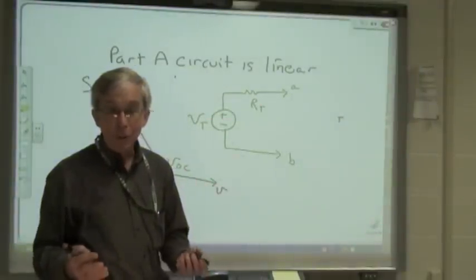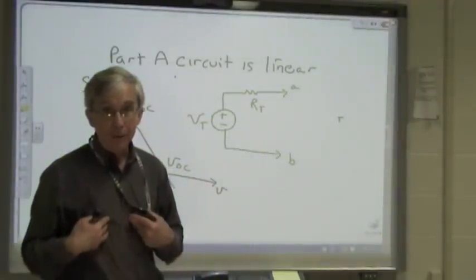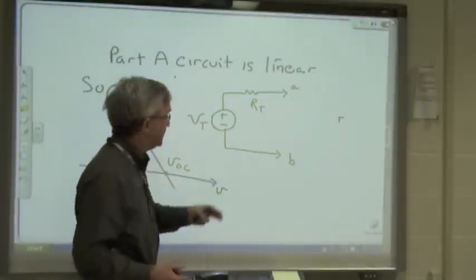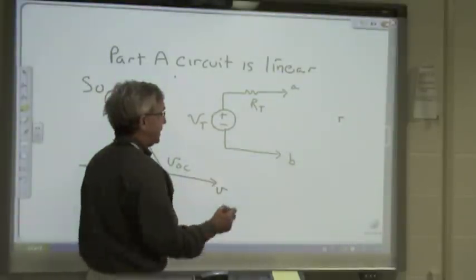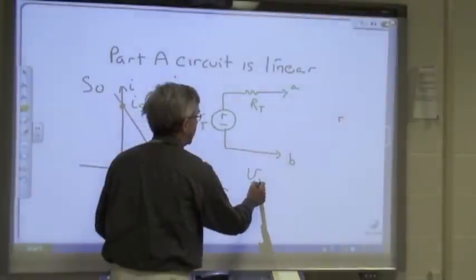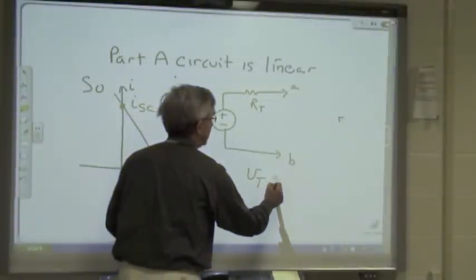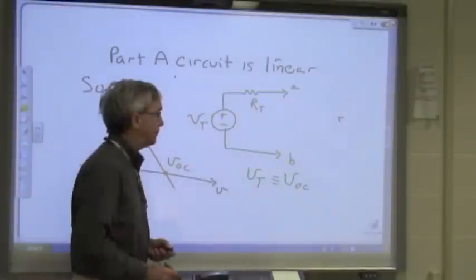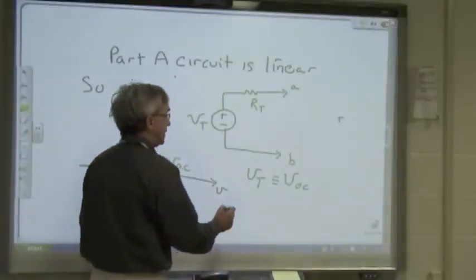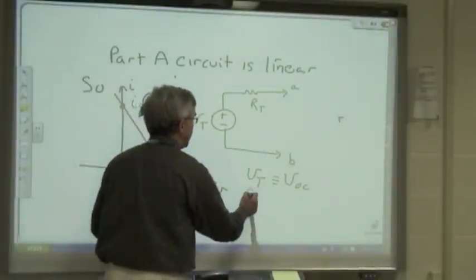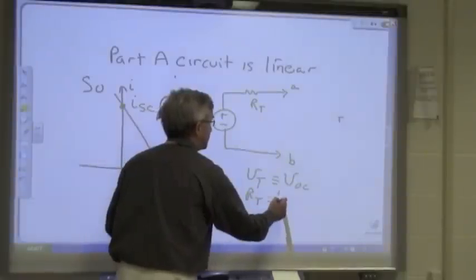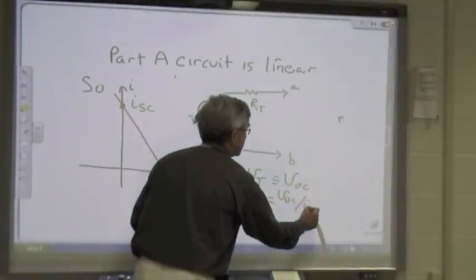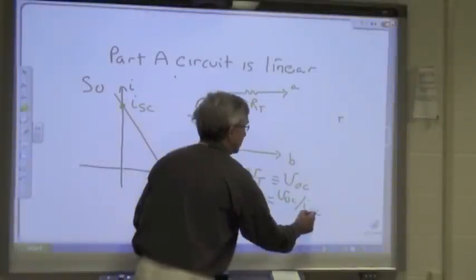To summarize: this will be the equivalent of circuit A if the Thevenin voltage equals the open circuit voltage of circuit A, and if R sub T equals the ratio of the open circuit voltage to the short circuit current.